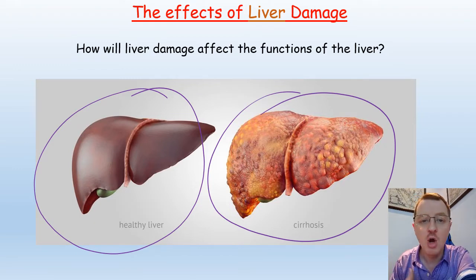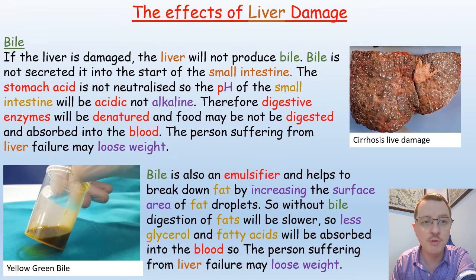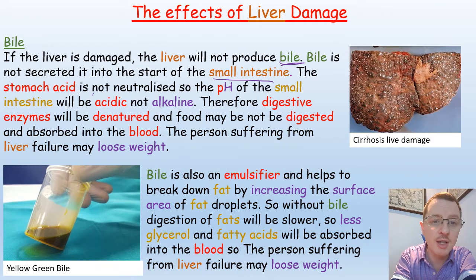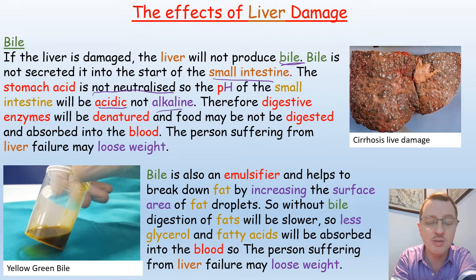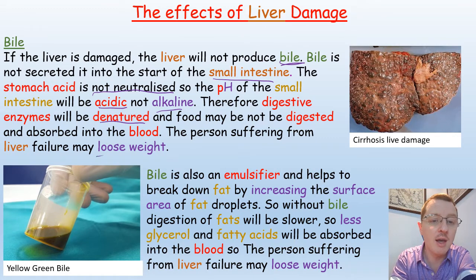Once you have a damaged liver, what effect will that have on your body? Because the liver has many different metabolic functions, it will have many different effects. For example, if the liver is damaged it will not produce bile, so bile will not be secreted into the small intestine. The stomach acid is not neutralized, so the pH of the small intestine will be acidic and not slightly alkaline. Therefore digestive enzymes will be denatured, food may not be digested and absorbed into the blood, and the person suffering from liver failure may lose weight.